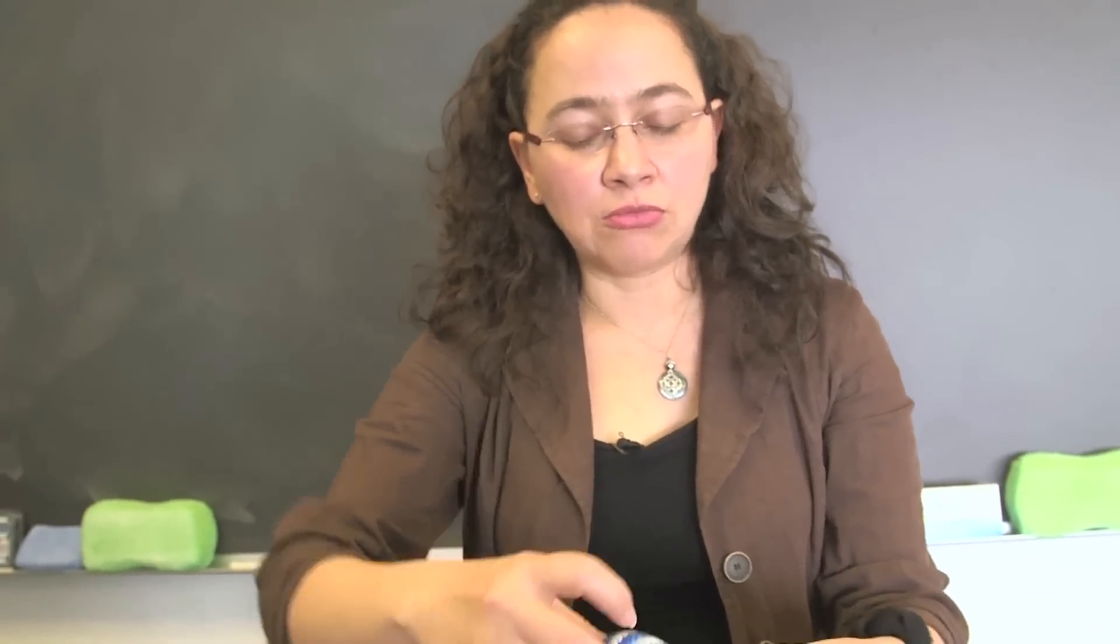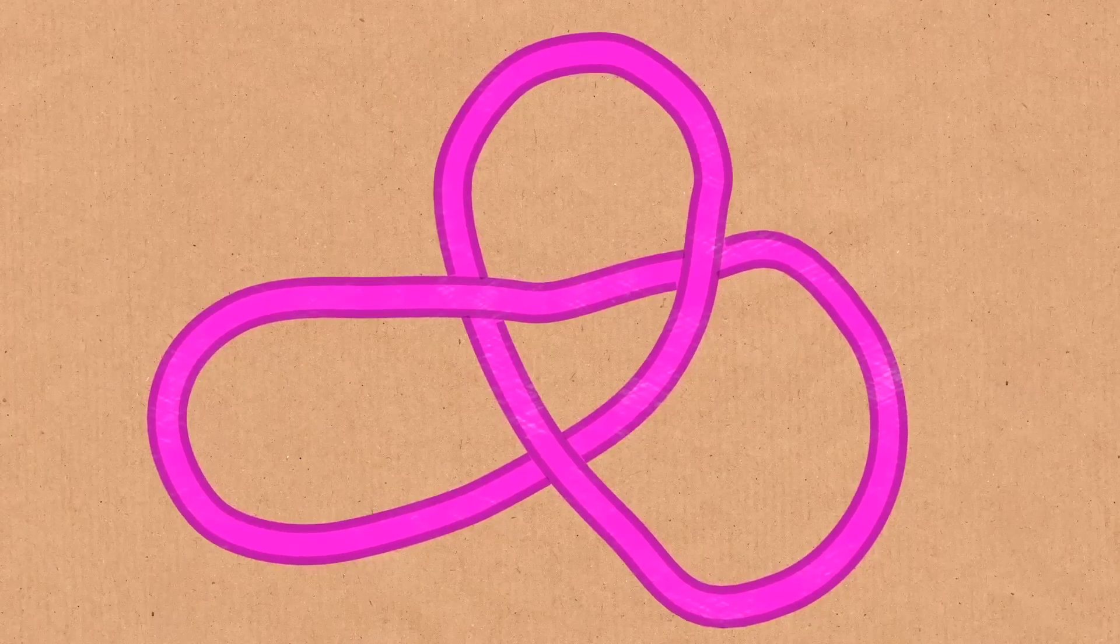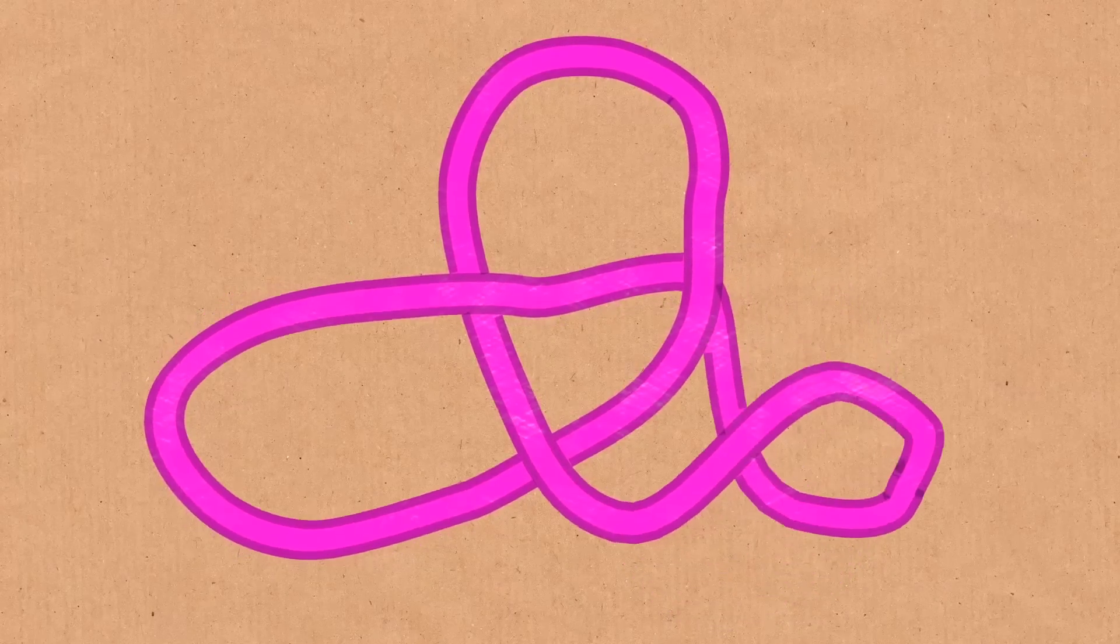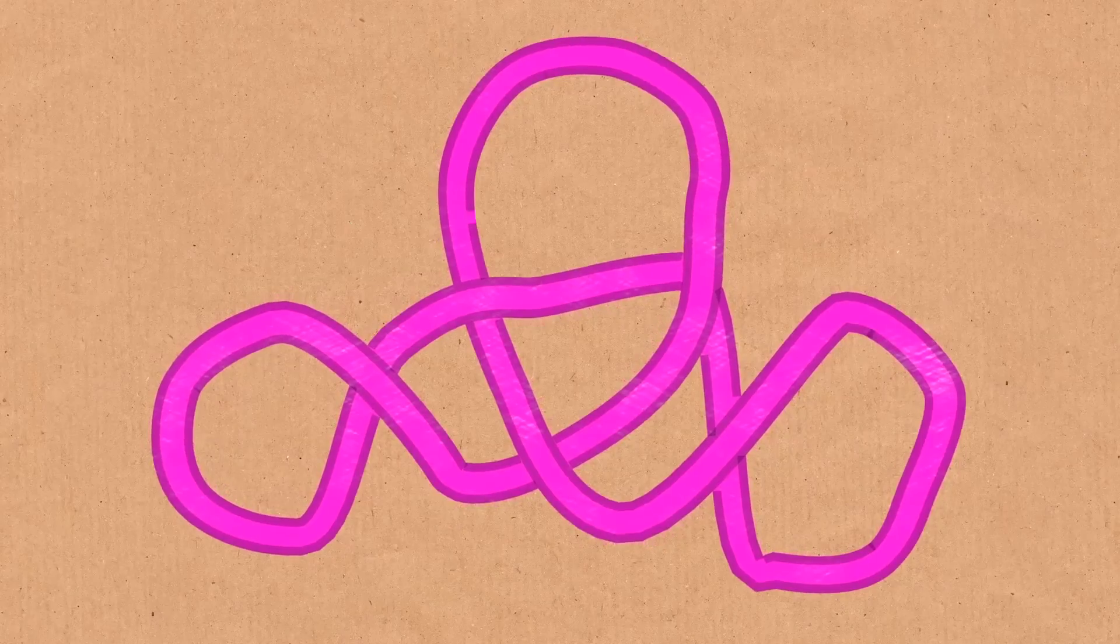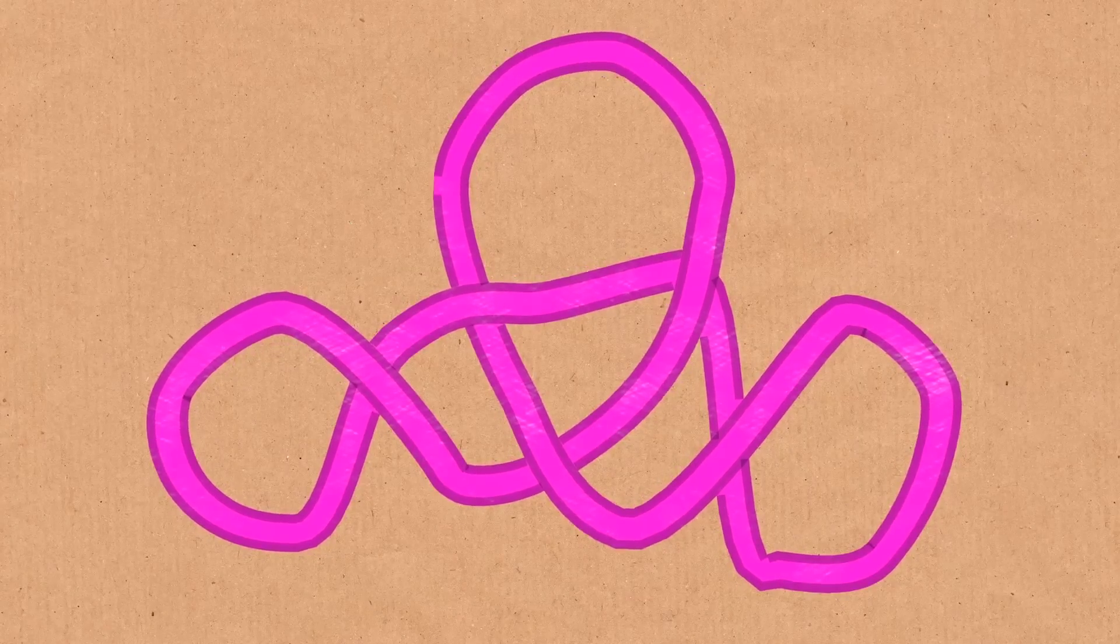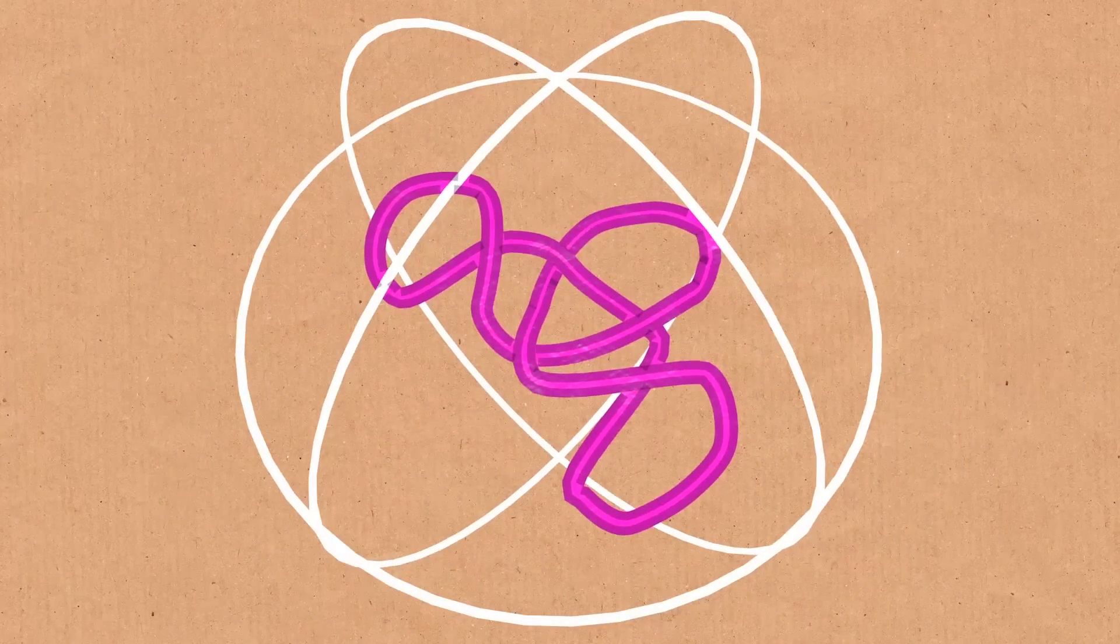Now, if we take a very long chain and we allow it to move in three-dimensional space, we can measure geometrical properties like the writhe, which measures the amount of coiling of this curve around itself. Or we could measure the radius of gyration, which intuitively is the radius of the smallest sphere that contains this chain.